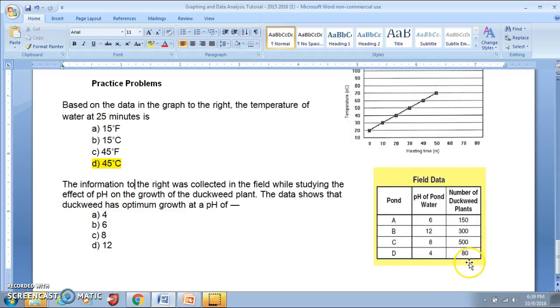So then I can look at my chart. I look at my title field data. That gives me nothing. So I look at my column headings. I have four different ponds, and for each of the ponds, they tell me the pH of the pond water and the number of duckweed plants. So the number of duckweed plants must be our indicator of the growth of the duckweed. So let's look for the pH where we have the most duckweed plants growing, and it looks like the most duckweed plants grow when we have a pH of 8. So the correct answer here is going to be C, 8.